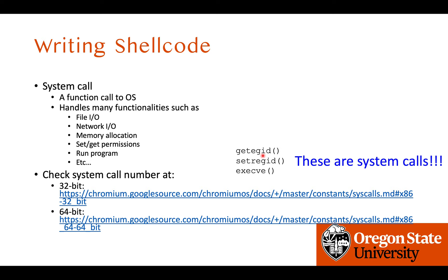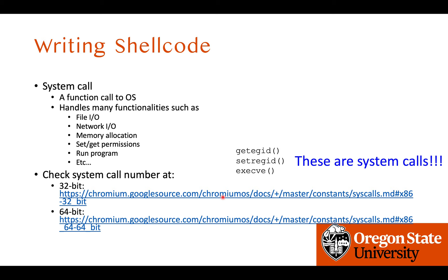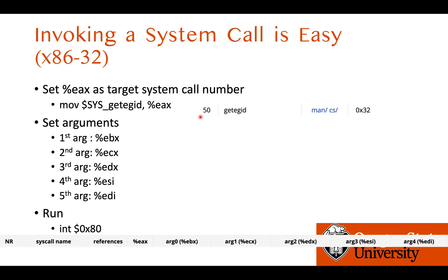Let me give an example of how to invoke a system call in a 32-bit x86 machine. First, you put the system call number into the EAX register as the target system call. For example, to call getegid, you look up the 32-bit system call number, which is 50. You can also use the symbolic constant sys_getegid. We need to set this system call number to EAX — you can regard EAX as a function selector. For any required arguments, in 32-bit x86 Linux, the first argument goes in EBX, second in ECX, third in EDX, fourth in ESI, fifth in EDI. It's worth memorizing this order because you will use it a lot.